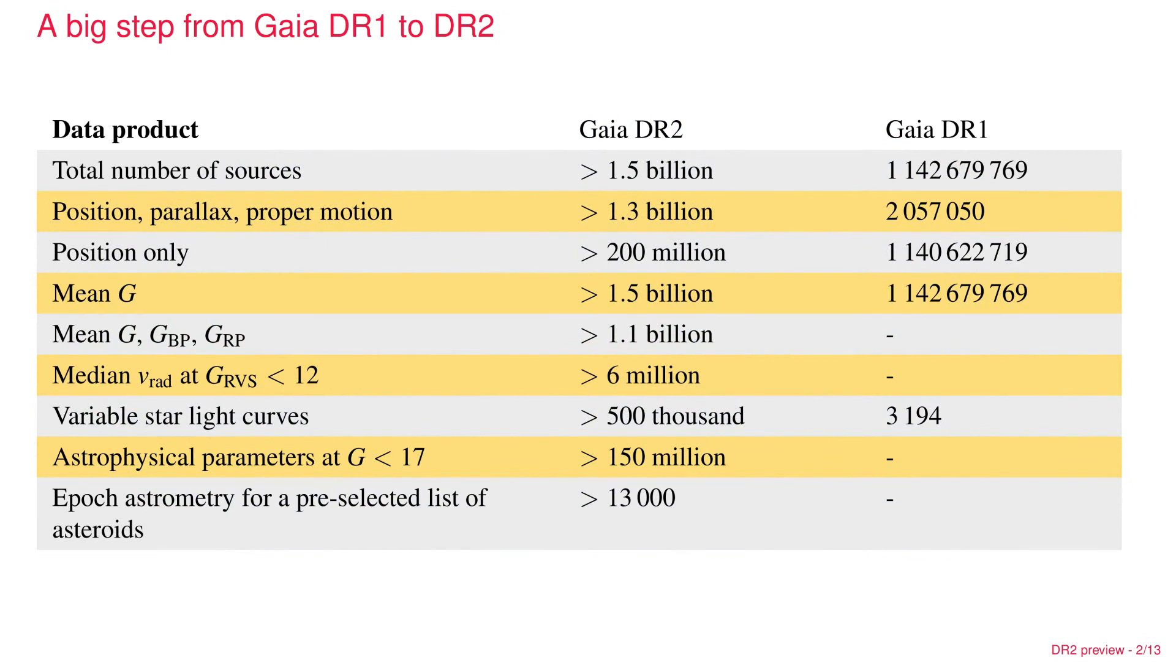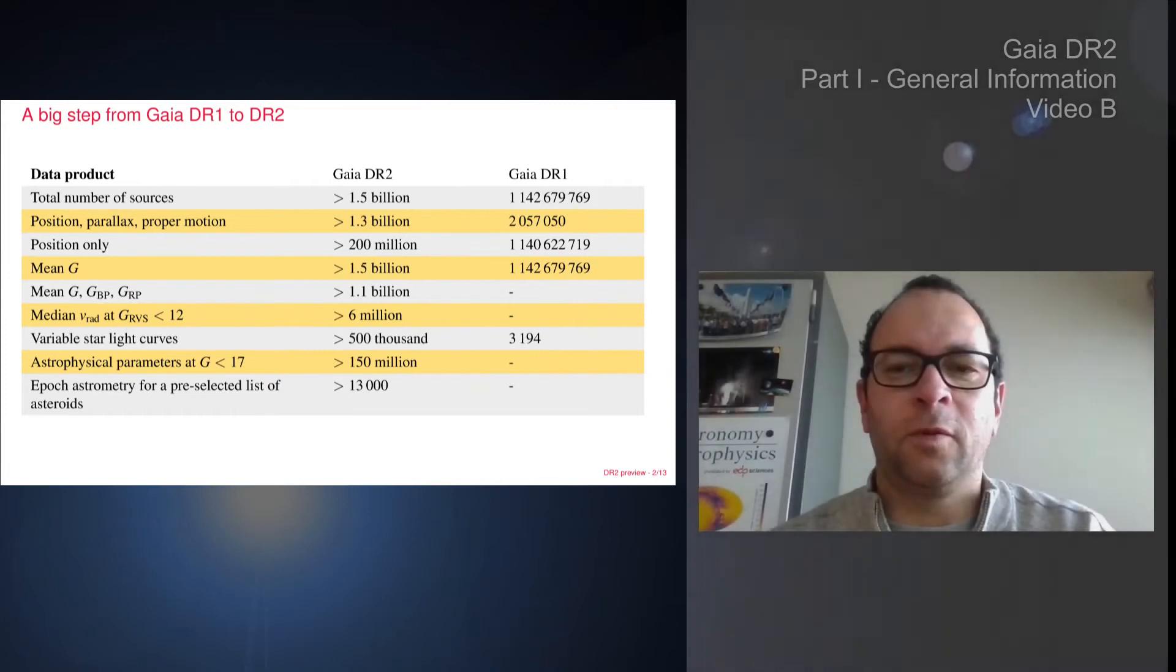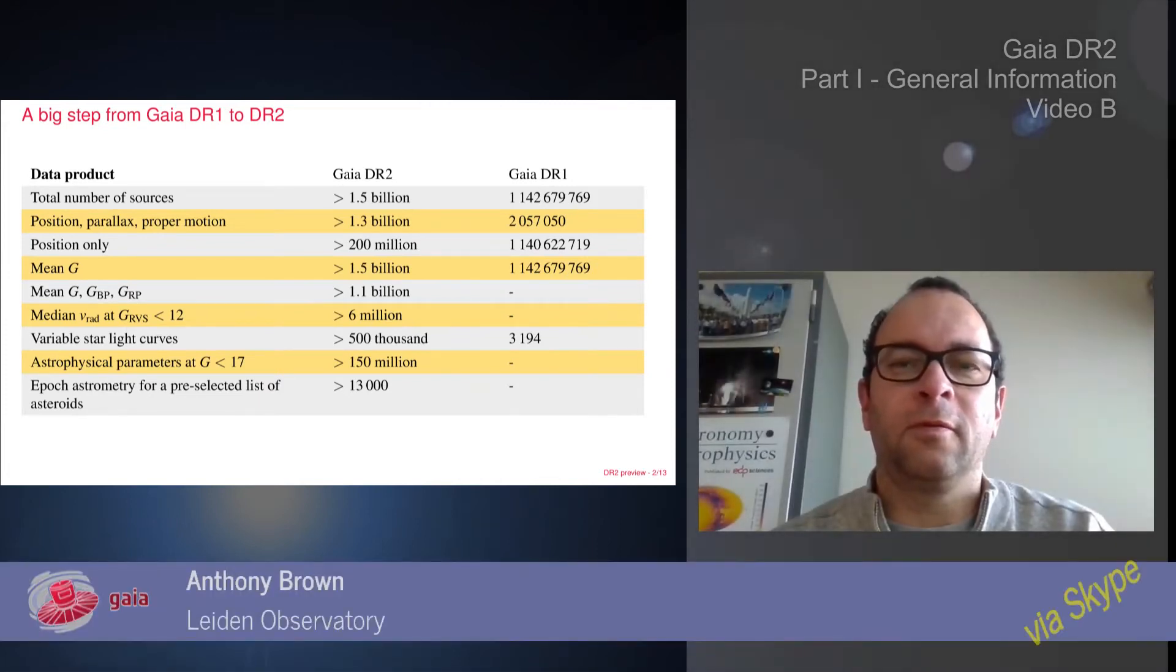The first slide contains a summary of what is going to be in the release. On the day we announced this, there was a very nice tweet by David Hogg that this table is breaking my brain. I think this really conveys that the community will be quite surprised, maybe even shocked, by how much we are going to put out compared to data release one.